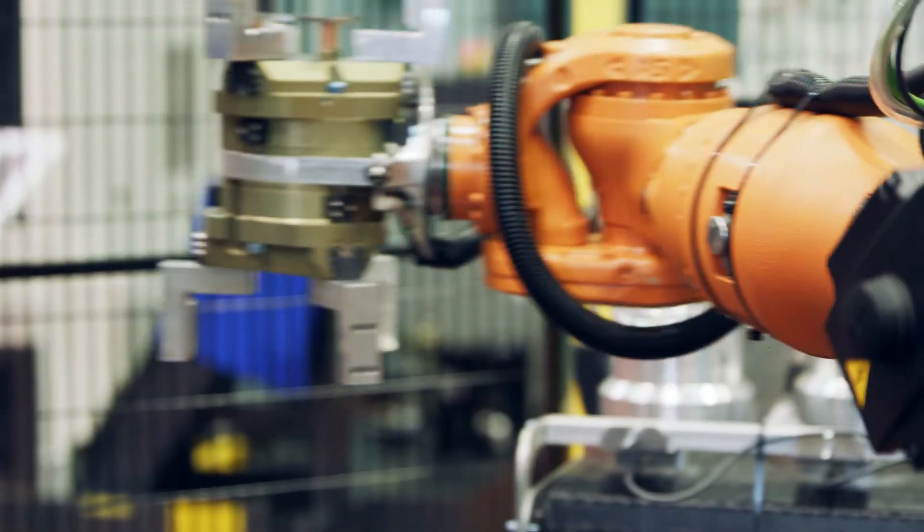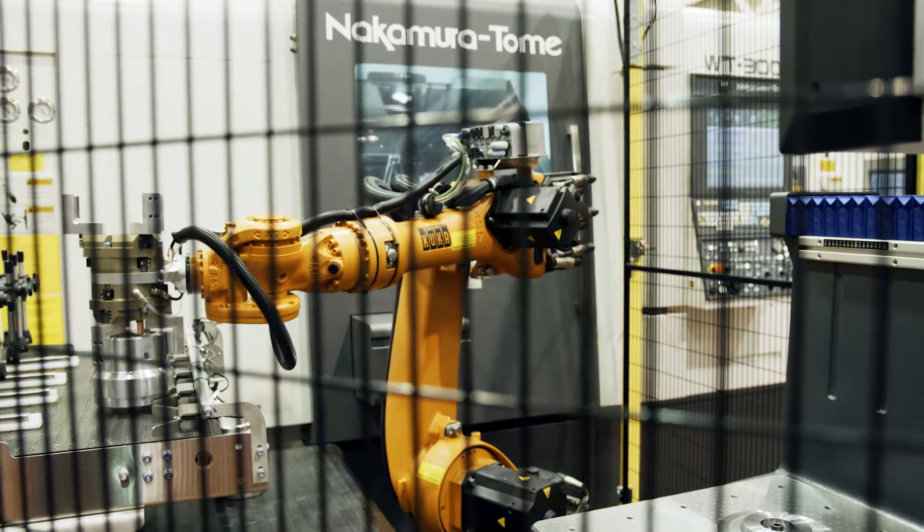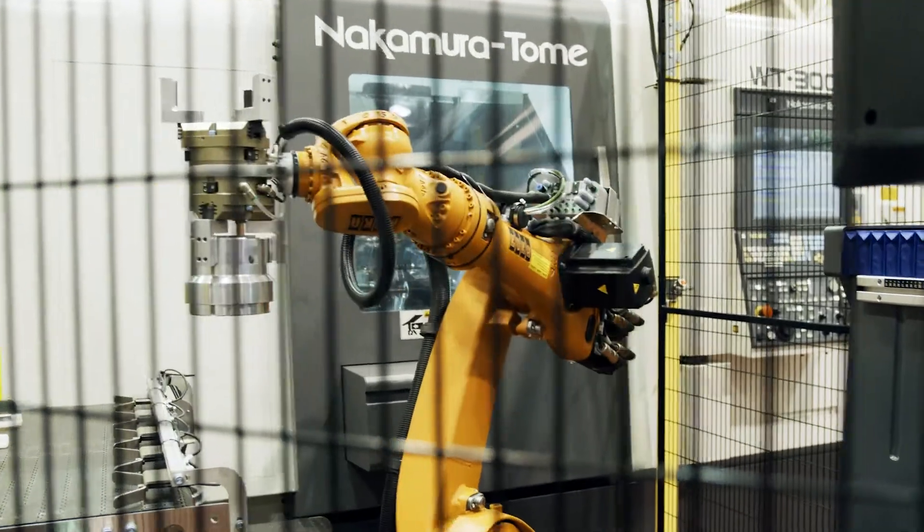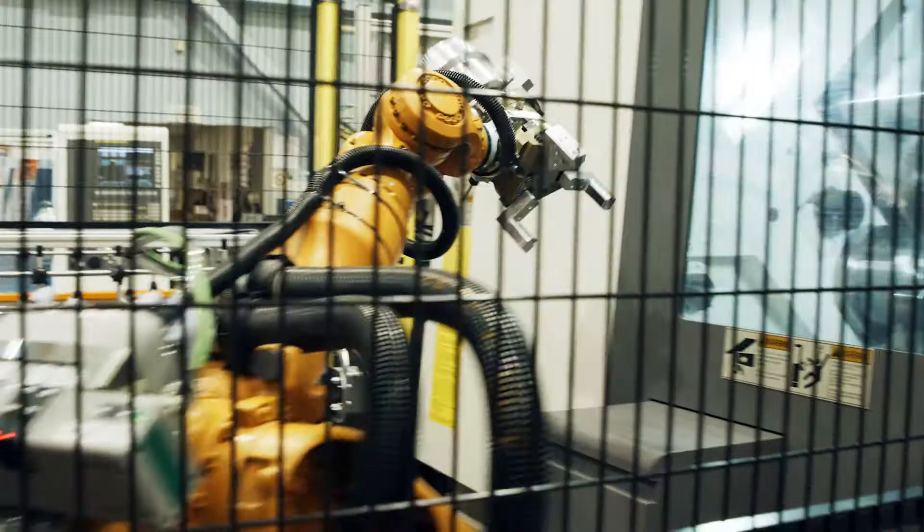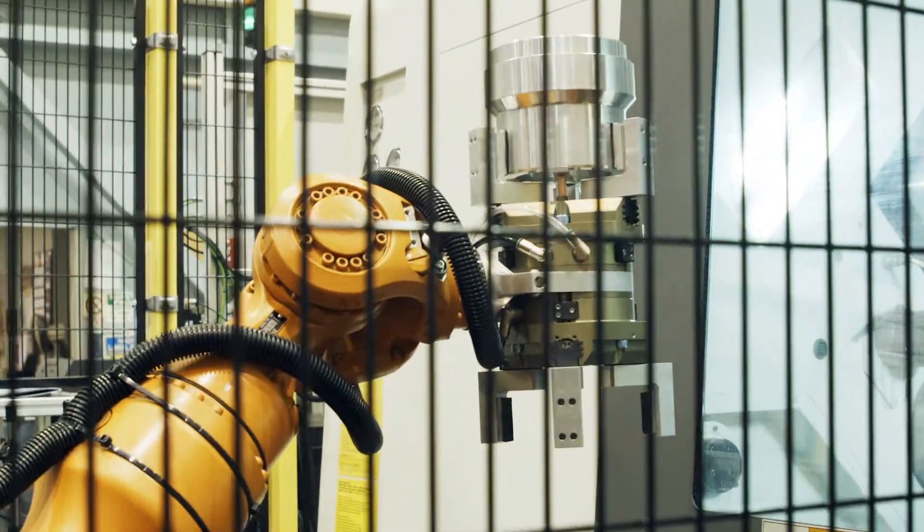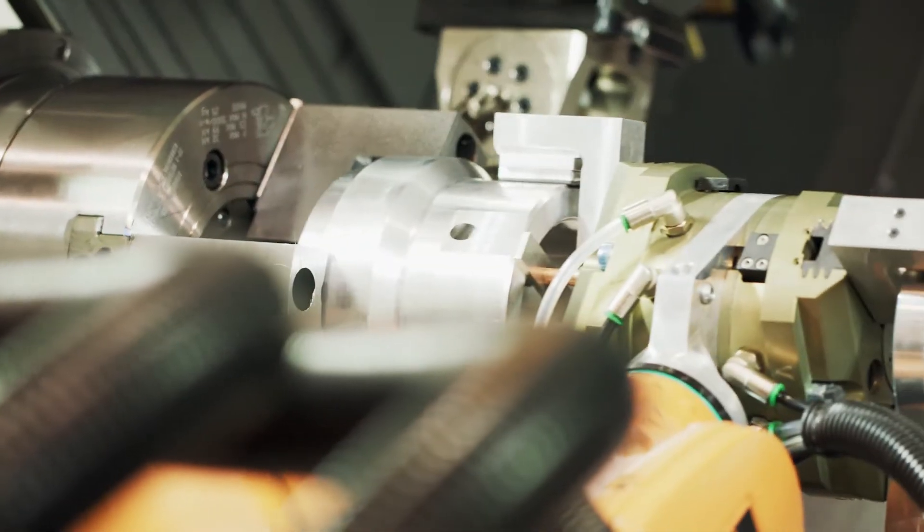The WT300 can be provided with a number of different automated loading-unloading solutions. On this particular machine, we have a KUKA robot. It loads the slug into the left spindle and removes the completed part from the right spindle.